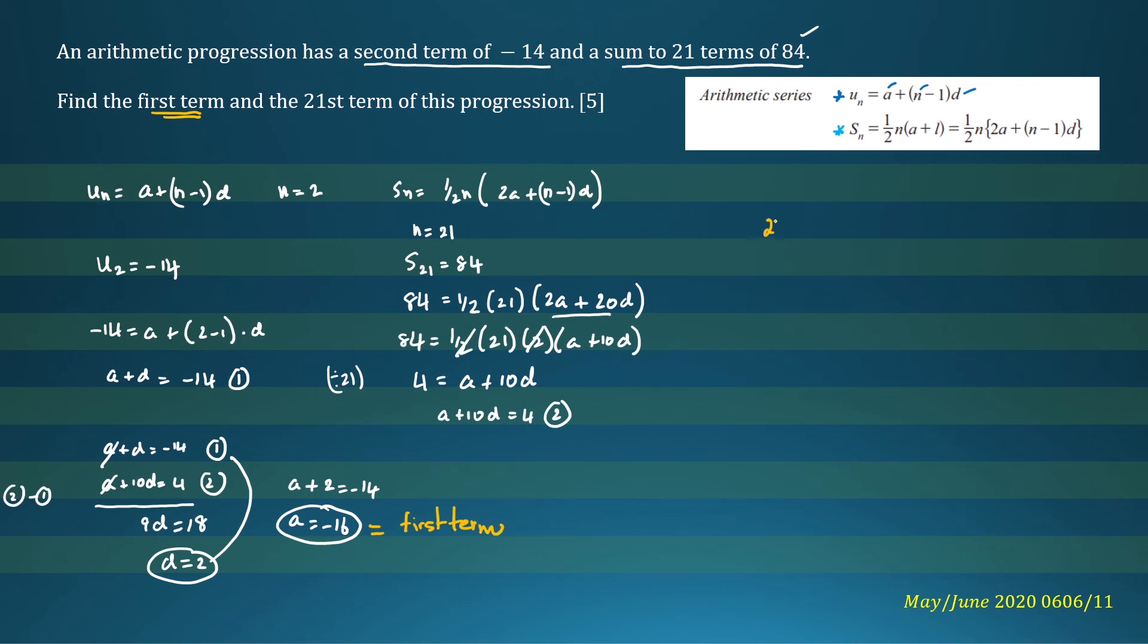Now we need to find the 21st term of the progression. Now we know a and d. We can write down our equation. We can write u_n is a, which is negative 16, plus (n minus 1) times d, and d is 2. We want to find the 21st term.